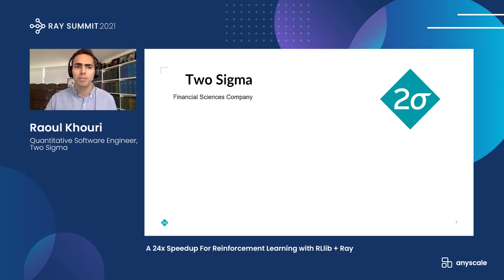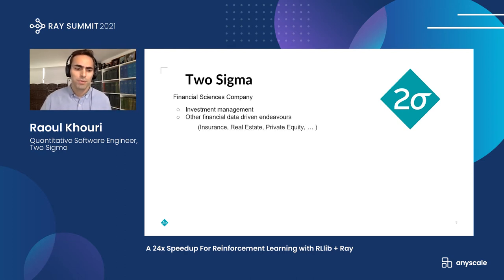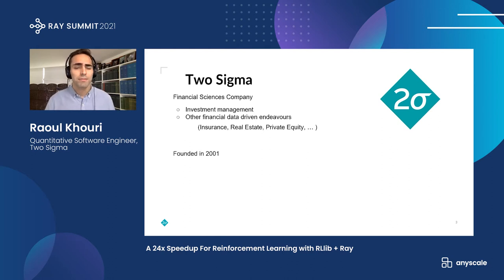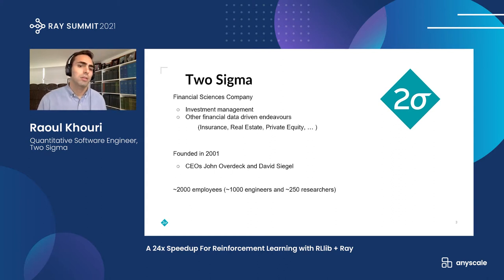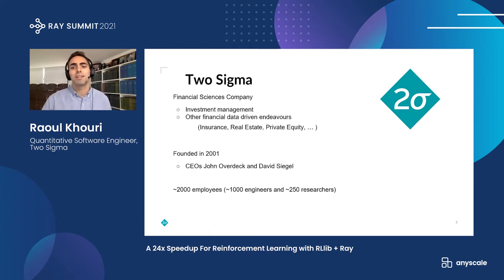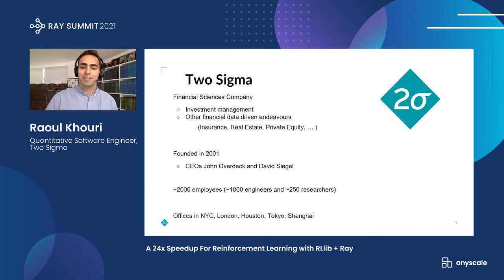The company was founded in 2001 by our CEOs, John and David. We have roughly 2,000 employees — about 1,000 engineers and 250 researchers. The company is very data-driven, very STEM-focused, and a lot is devoted to the scientific process. We have offices in New York, London, Houston, Tokyo, and Shanghai, New York being the largest. This is our New York office that I haven't been in since March 2020, and I miss it a lot.